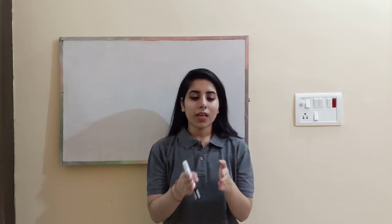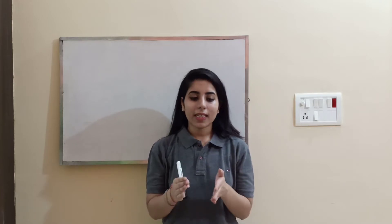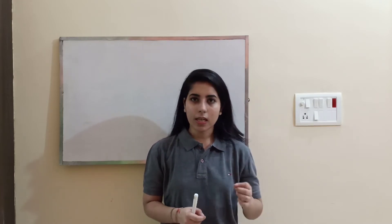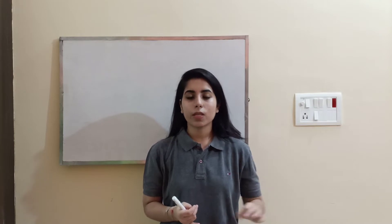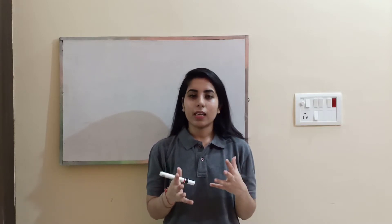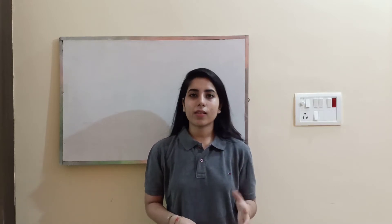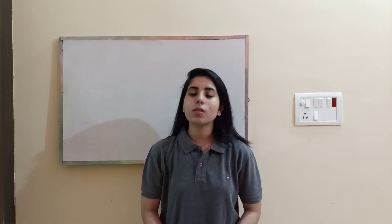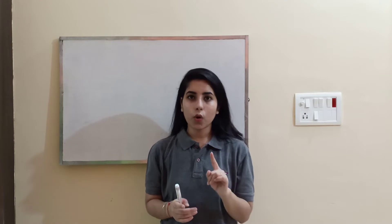The very first formula you need to know is the Lagrangian: L is equal to T minus V, where T is kinetic energy and V is the potential energy of the system. To get the Lagrangian easily for any given system, you should prepare the kinetic energy expressions for different coordinate systems in advance, so in the exam you can quickly get those expressions.